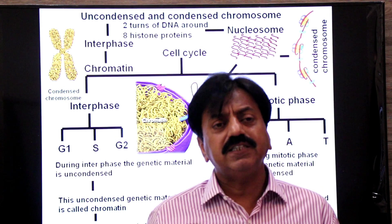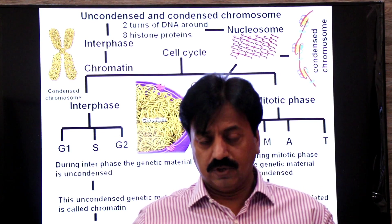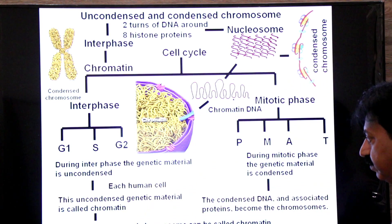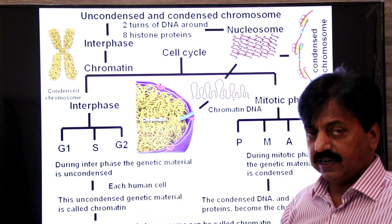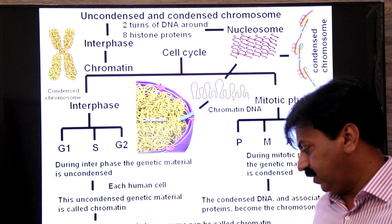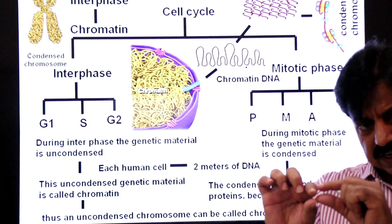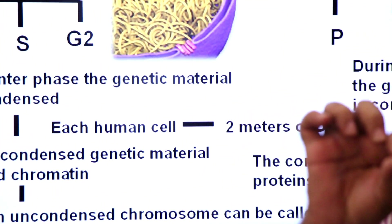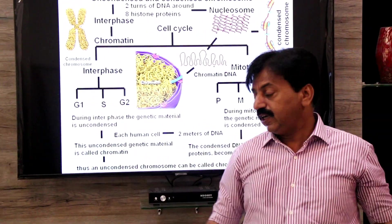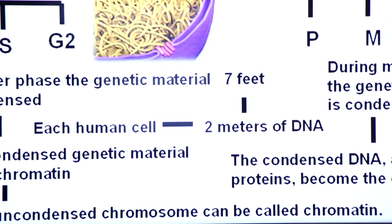So what is called a condensed chromosome? It occurs during prophase and metaphase. In a human cell, DNA is a very long molecule — about 2 meters of DNA if we stretch the DNA from a single cell's nucleus end to end, which is about 7 feet.